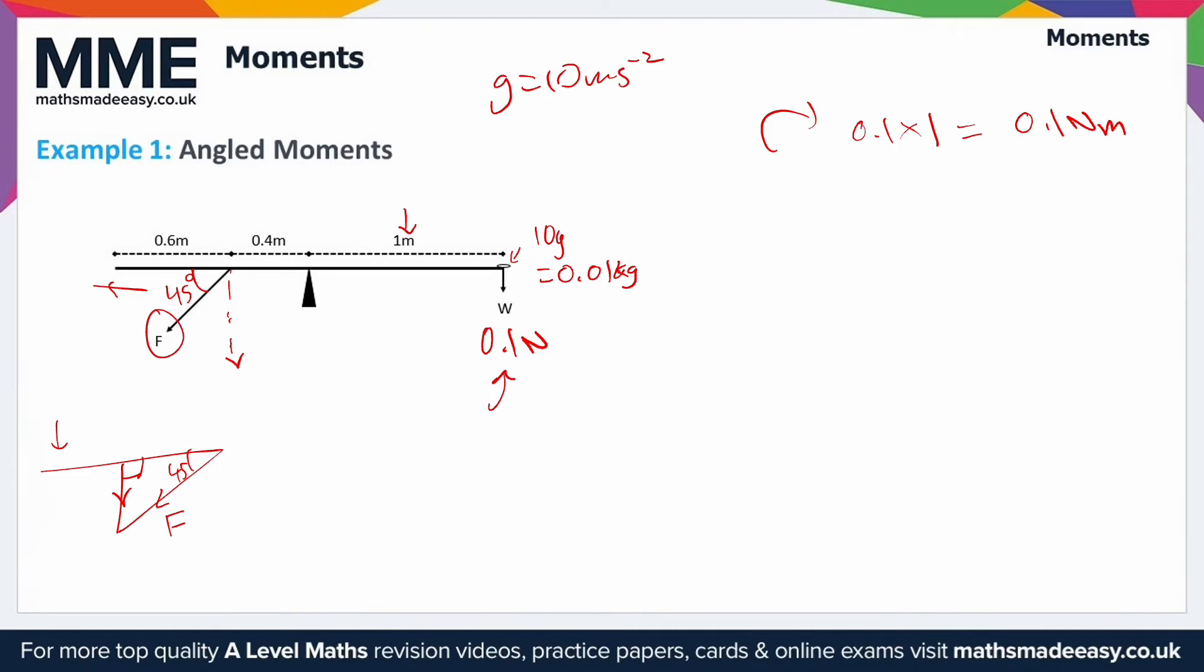Well we would use trigonometry. This is the opposite. So this side would be f sin 45. Of course with 45 the horizontal component and the vertical component would be the same but it's just an example.